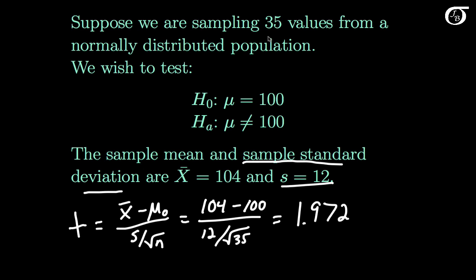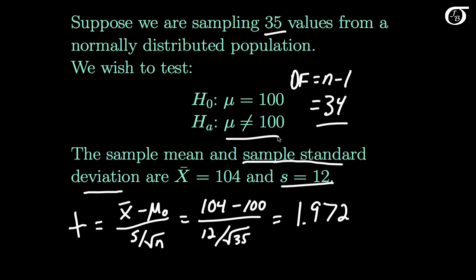Here our sample size is 35, and so the degrees of freedom, being n-1, are 34 in this case. Our alternative hypothesis is two-sided, and so the p-value is going to be the area in the tail beyond this test statistic doubled, under a t-distribution with 34 degrees of freedom.